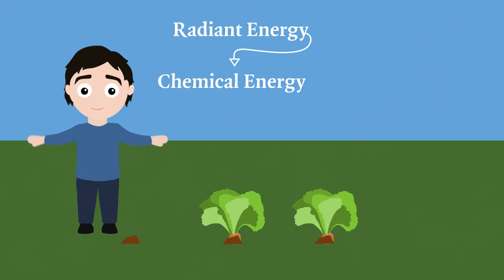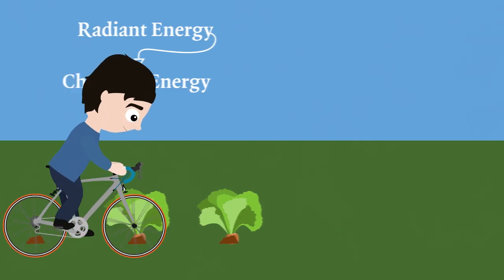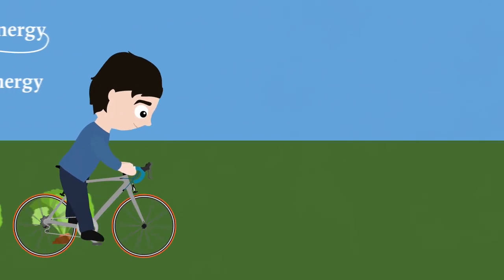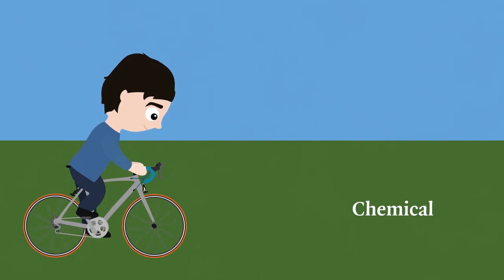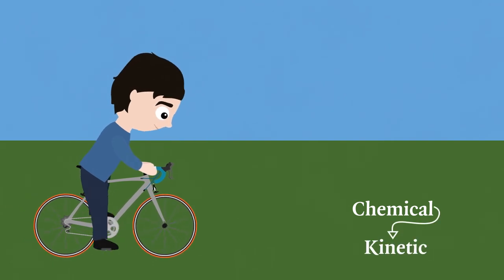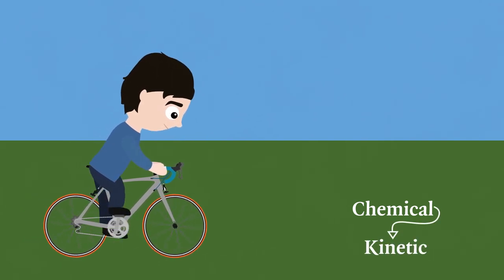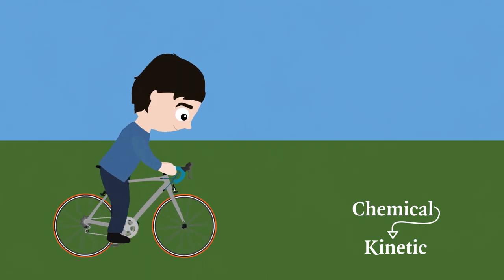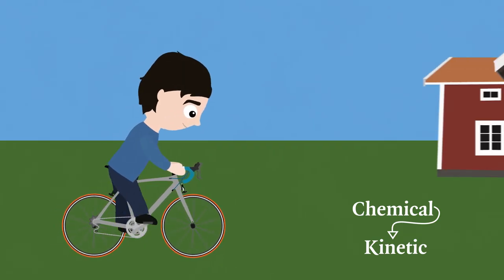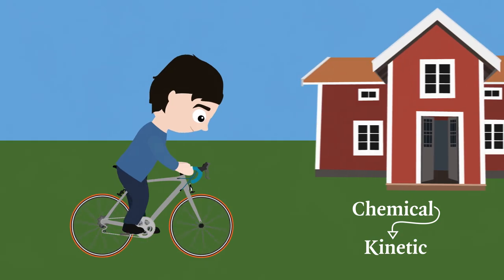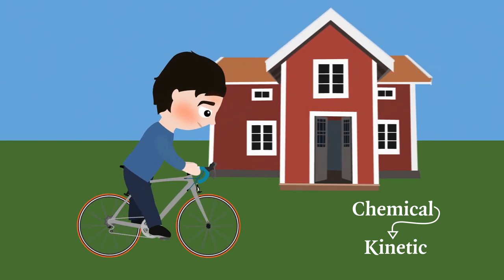Now you feel strong, so you decide to get on your bicycle and go for a ride. As you pedal, the chemical energy from the lettuce turns into kinetic energy in your legs, causing the bicycle to move. Some of the kinetic energy is converted to thermal energy, which is why you get warm after pedaling for a while.